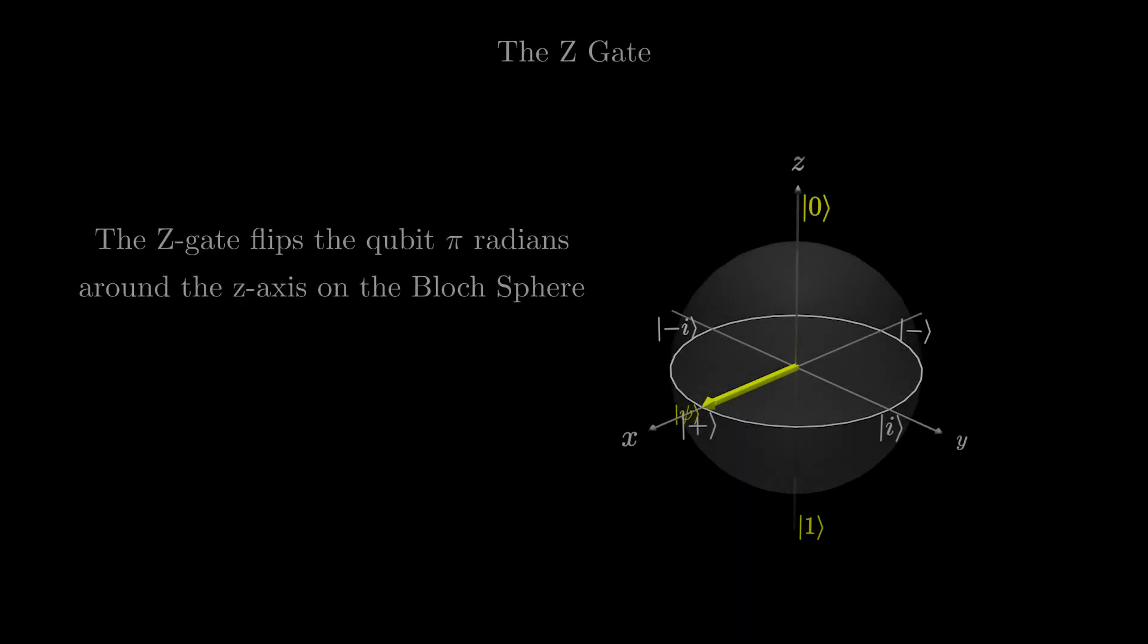Lastly, we have the Z gate, which rotates the qubit 180 degrees or pi radians around the Z axis.